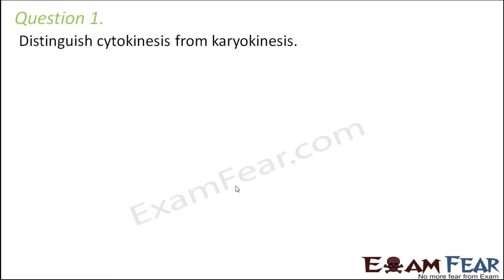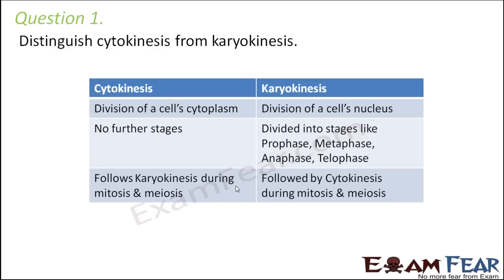Question number 1: Distinguish between cytokinesis and karyokinesis. As I have mentioned before, 'cyto' is cytoplasm, 'karyo' is nucleus, and 'kinesis' means movement. So separation of cytoplasm is cytokinesis, and separation of nucleus is karyokinesis. Cytokinesis is a division of a cell's cytoplasm, while karyokinesis is division of a cell's nucleus.